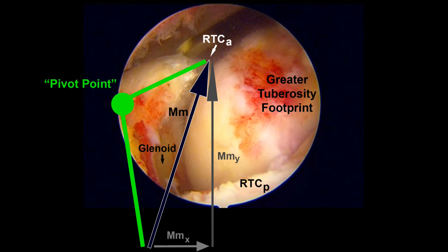It is critical to recognize that the first margin convergent suture will be passed posterior medially and then anteriorly, with the posterior to anterior component of the vector being significantly greater than the medial to lateral component.